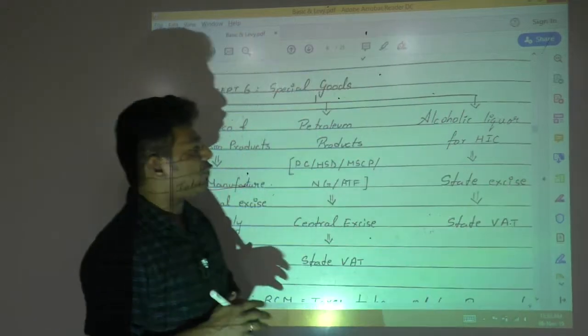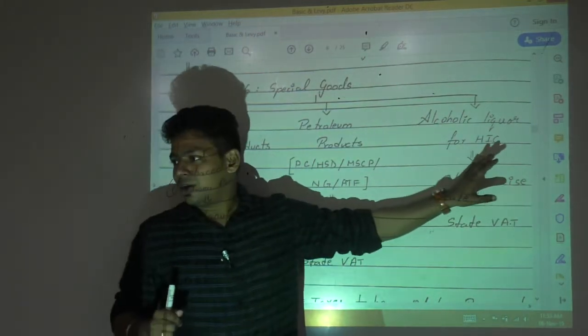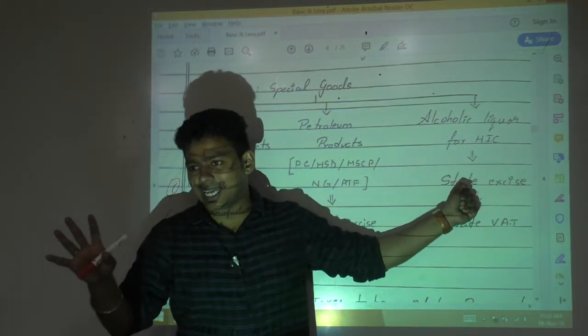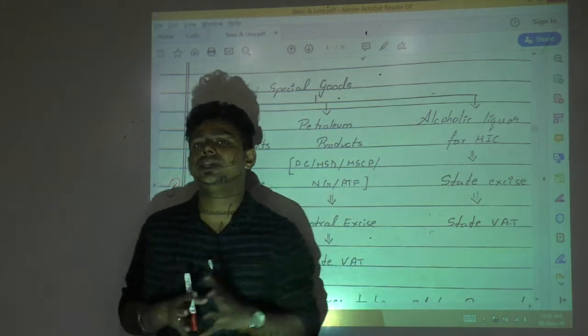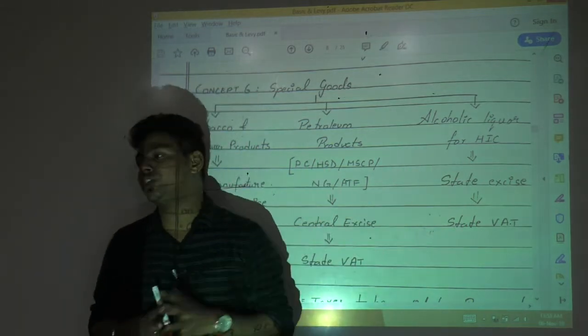Next, alcoholic liquor for human consumption. On manufacture also there is a state excise. And on sale there is a state VAT. Yes or no? So these are these three special products.